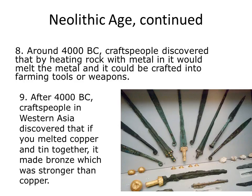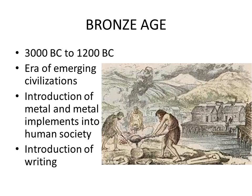Continuing with the Neolithic Age: around 4000 BCE, craftspeople discovered that by heating rock with metal in it, it would melt the metal and it could be crafted into farming tools and weapons. This was a major step towards civilization because once you can develop tools, you're able to build things and harvest. After 4000 BCE, craftspeople in Western Asia discovered that melting copper and tin together made bronze, which was much stronger than copper. Bronze becomes a very important element in the next era — the Bronze Age, which ran from 3000 BCE to 1200 BCE.